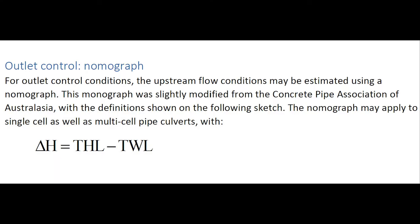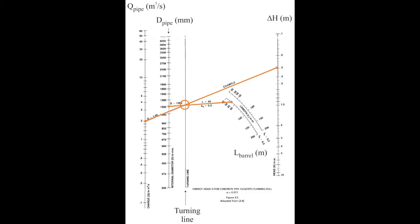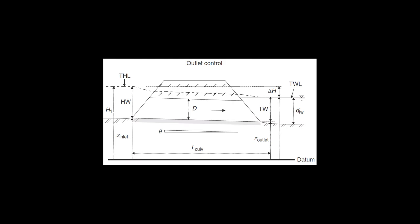For outlet control conditions, the upstream flow condition may be estimated using another nomograph, and this sketch illustrates an outlet control operation.